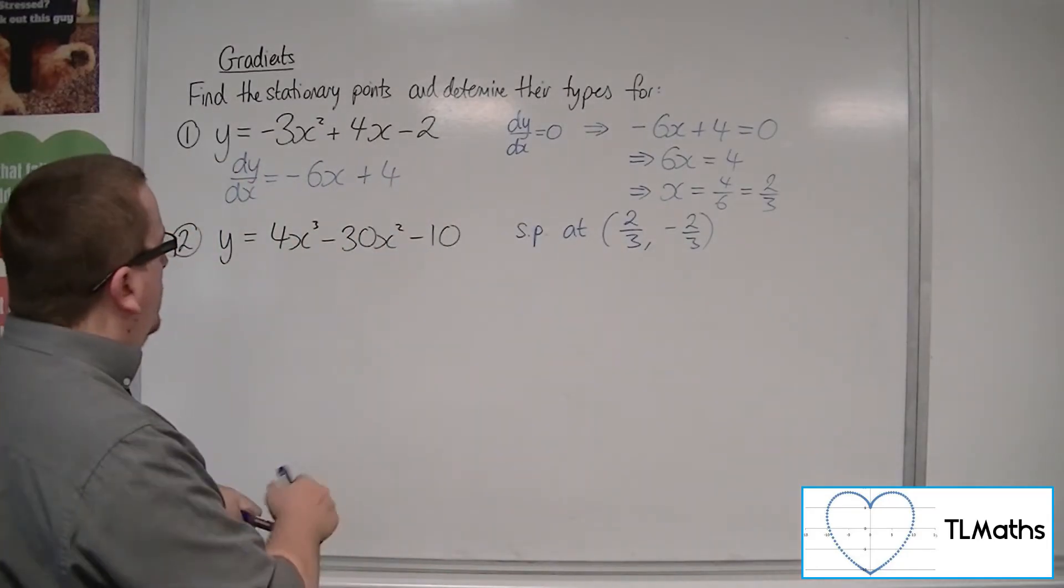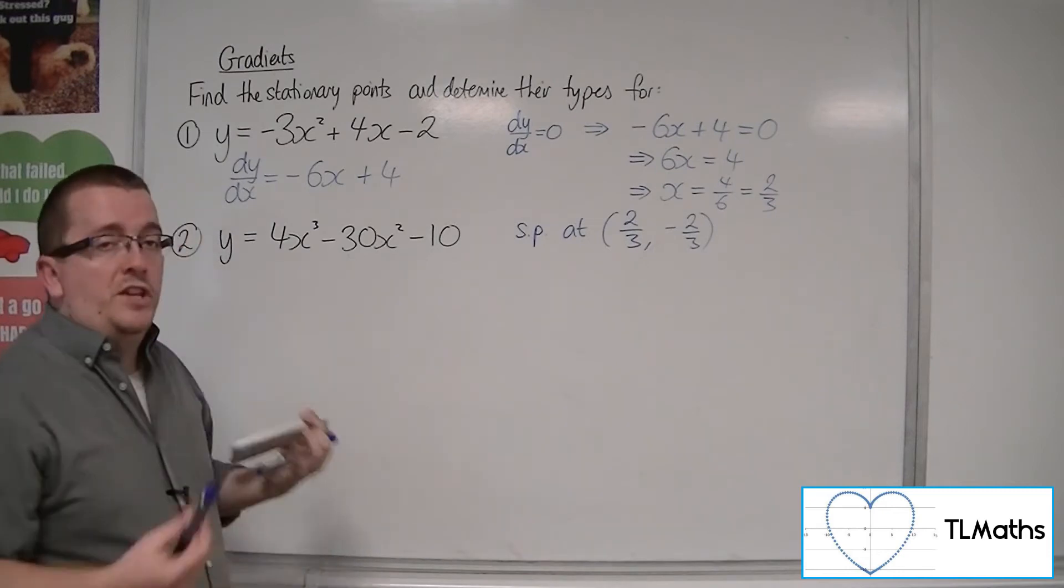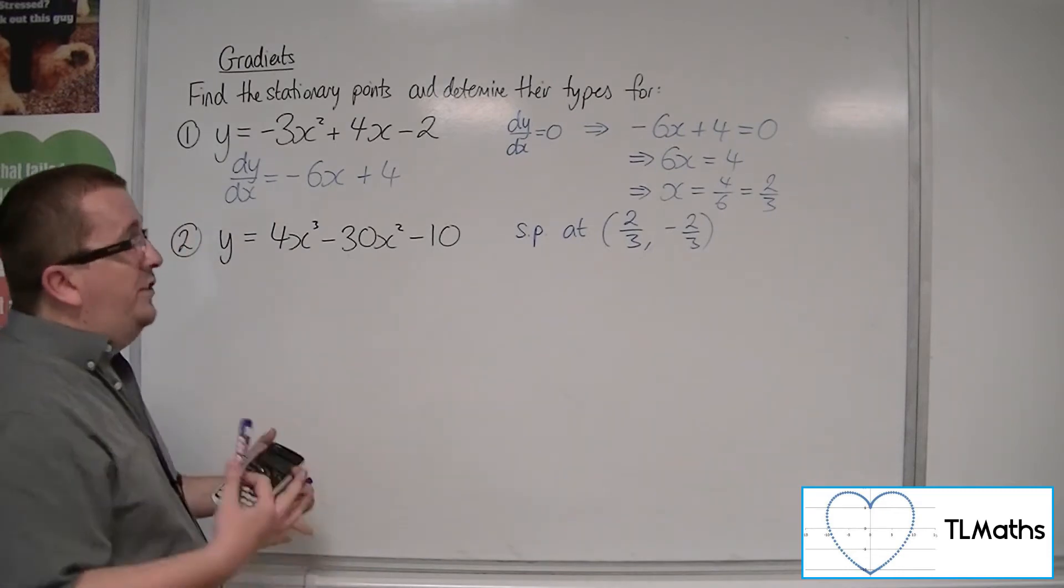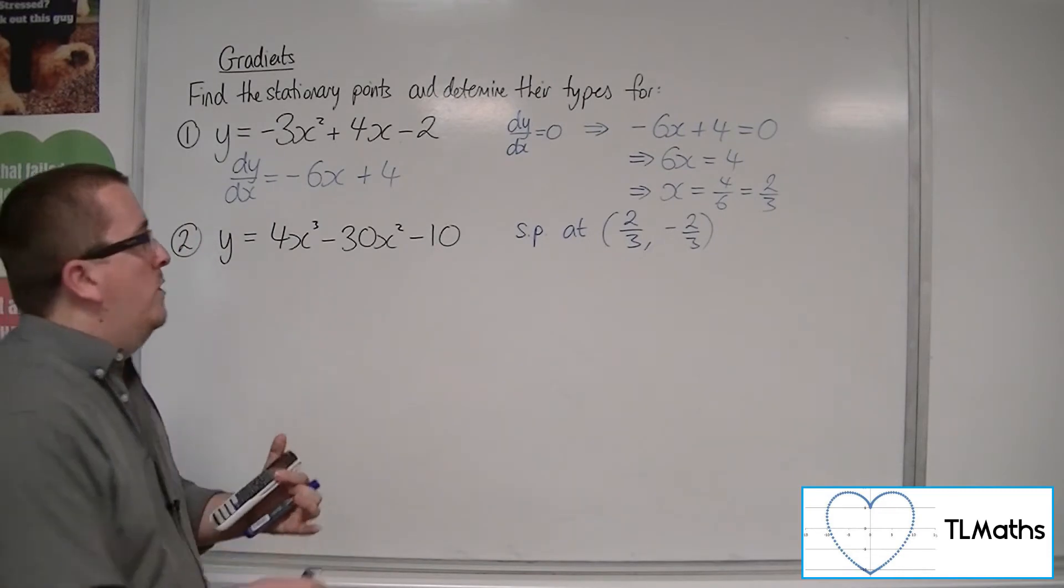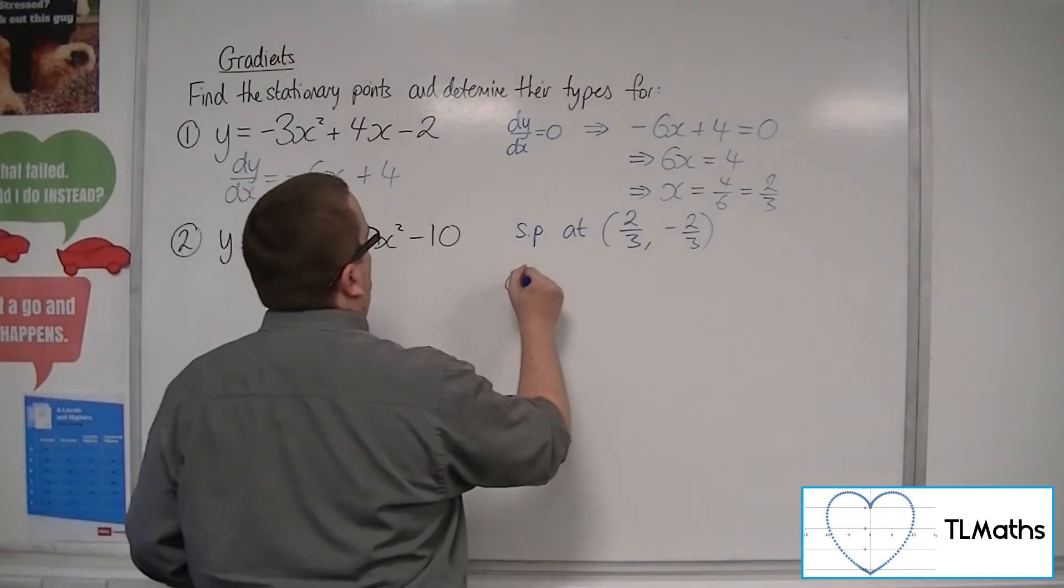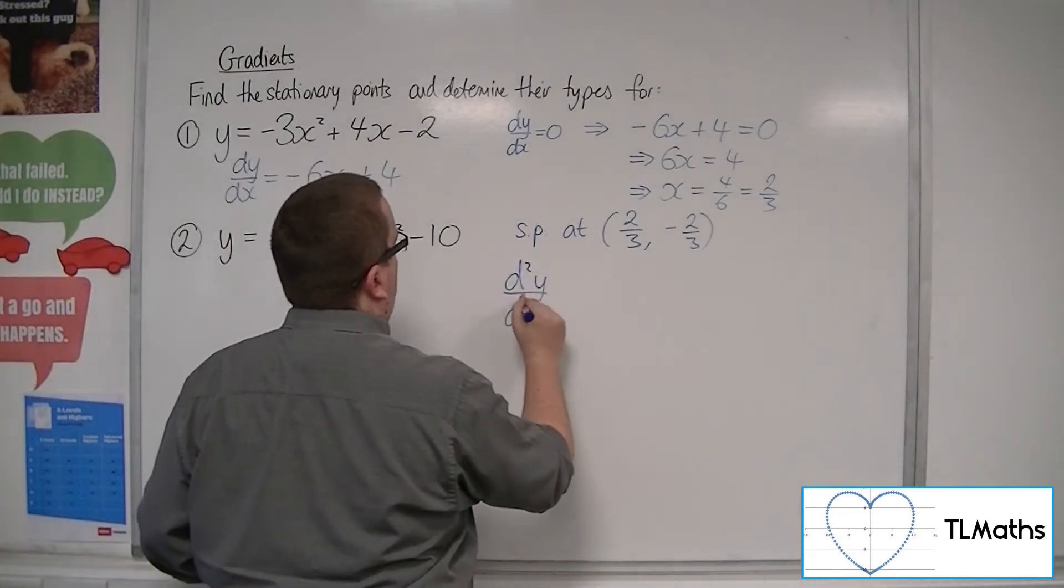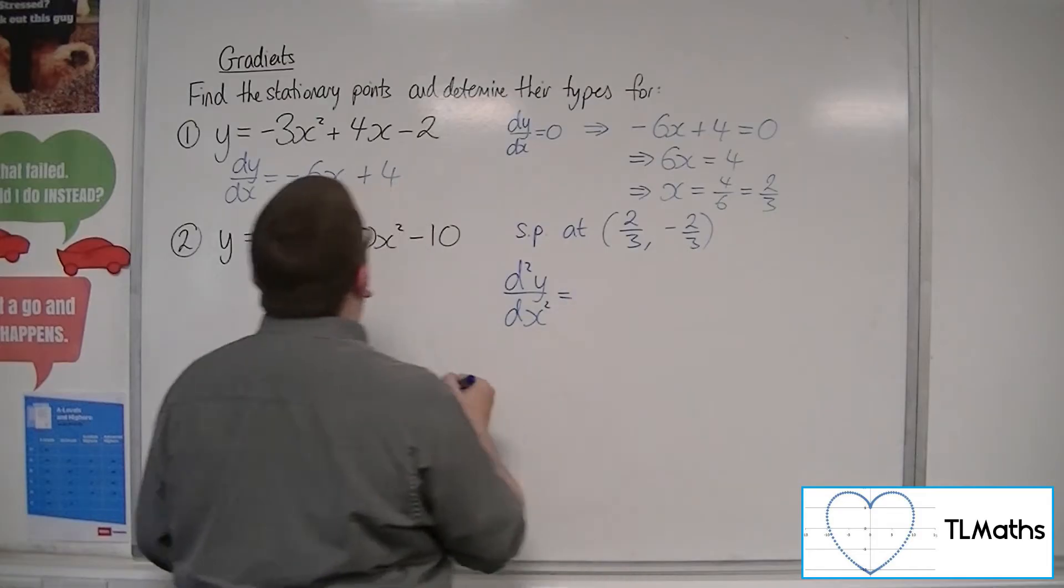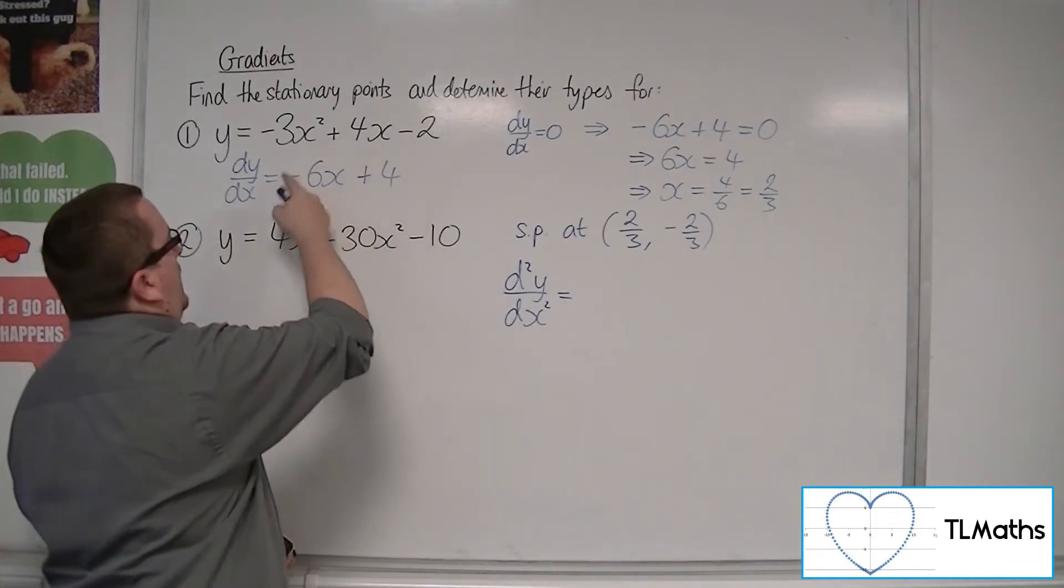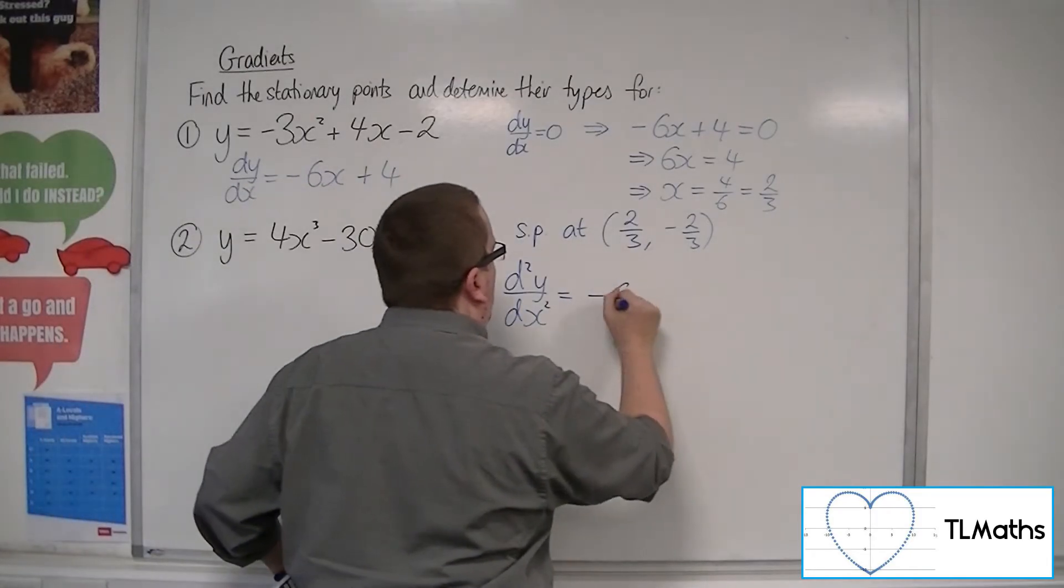The stationary point is at 2 thirds, minus 2 thirds. Now I want to determine its type. In order to do that, we find the second derivative. So d2y by dx squared, the second derivative. We differentiate this, and what we get is minus 6.